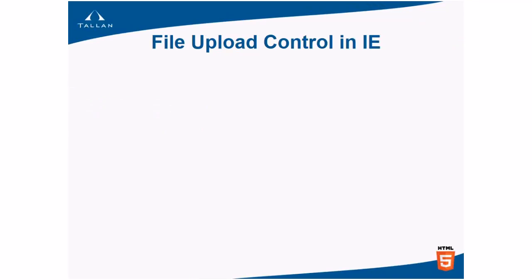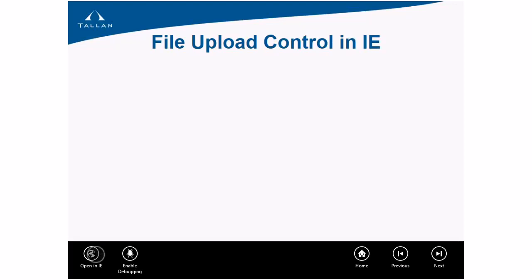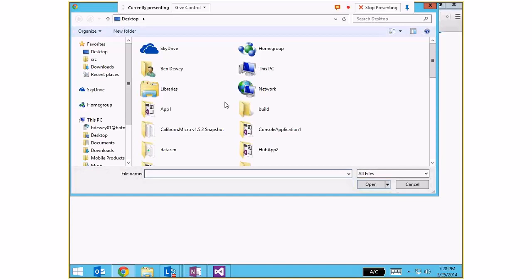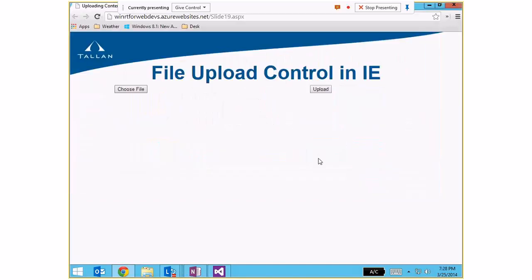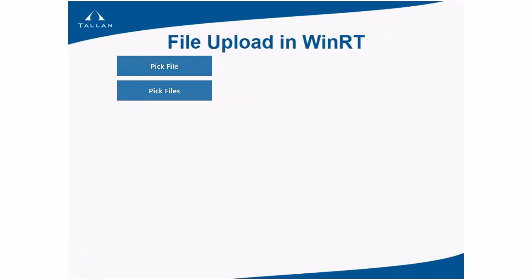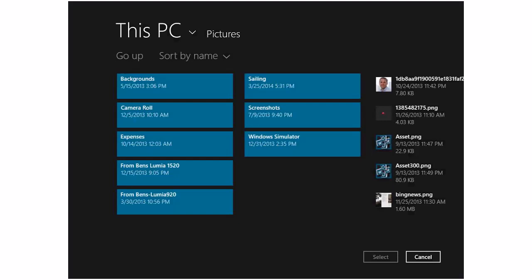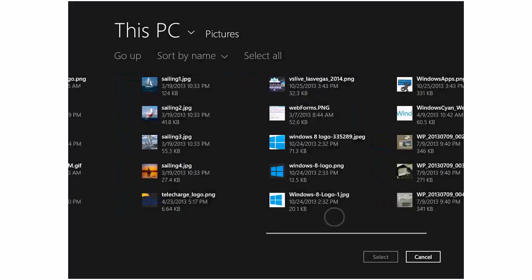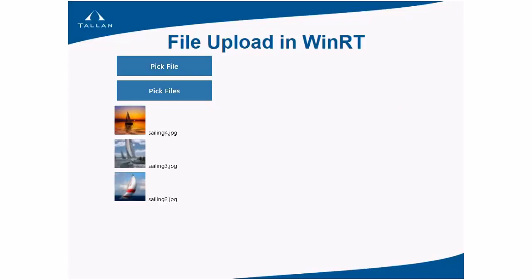Comparing file upload: in the browser, clicking Browse opens a classic file dialog, you select an image and hit upload, and the file goes to the server first before your code can access it. In the Windows Runtime version, clicking Pick File opens a native file picker; as soon as the file is selected you get instant access — you can read thumbnails and full-size images immediately. You can also pick multiple files at once and get instant access to all of them.